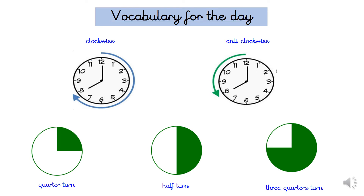Here are some words we will need to become more confident using: clockwise, anti-clockwise, quarter turn, half turn, three quarter turn. If you are turning clockwise, you will move in the direction where the numbers are in order — you go from 12 all the way to 8. Anti-clockwise is the opposite direction, going from 12 to 8 the other way. If you are describing a turn, you could use a quarter turn, half turn or three quarter turn, moving in a clockwise or anti-clockwise direction.